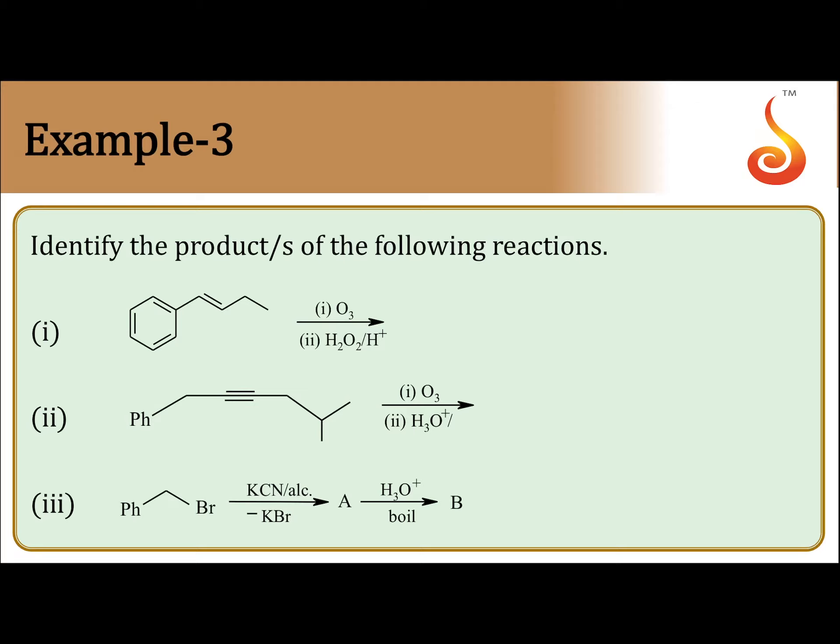Identify the products in the following reactions. Reaction 1 has ozone and H₂O₂, and reaction 2 has ozone, water, and H⁺. These are the reagents on the arrow. If ozone and zinc are on the arrow, it is reductive ozonolysis. If ozone with water and H⁺, or H₂O₂ and H⁺, are on the arrow, it is oxidative ozonolysis.